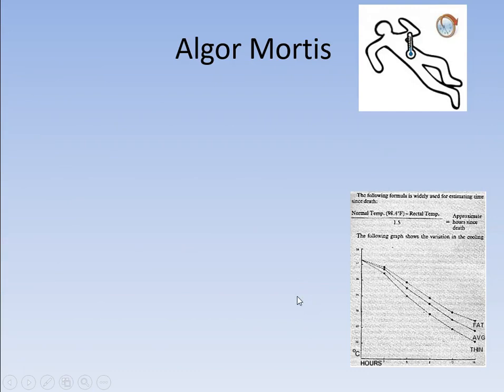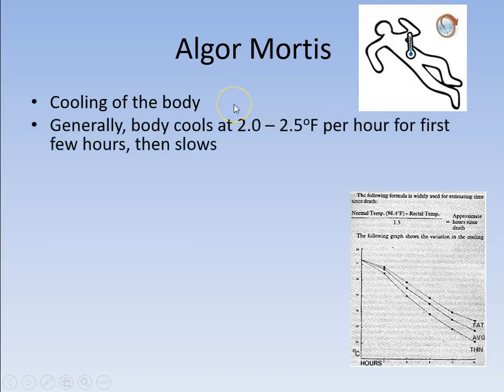And finally, we have algor mortis — quite simply, that's body temperature. Your body has a particular temperature while you're alive, and when you expire, you start cooling off. Generally, the body cools between 2 and 2½ degrees per hour for the first few hours, and then the cooling actually slows. It would be great if everybody's body cooled the same all the time — we could measure the body temperature, calculate back how many hours it's been cooling, and get a very accurate time of death.